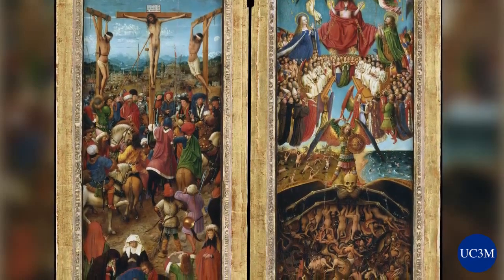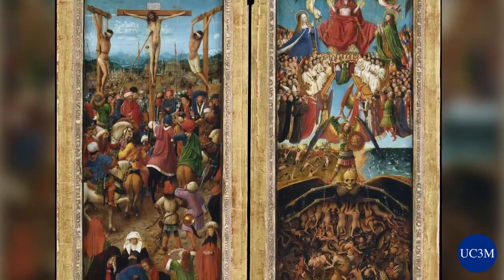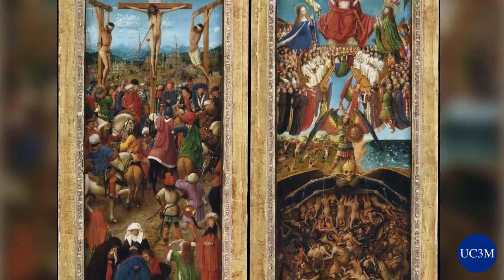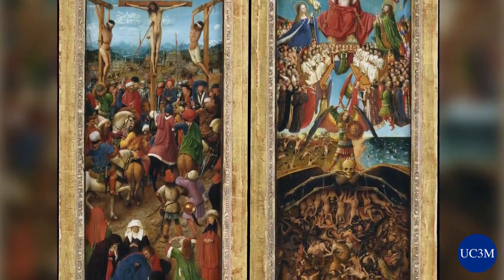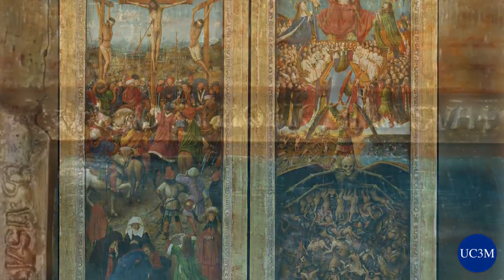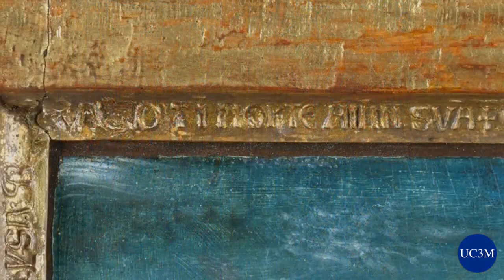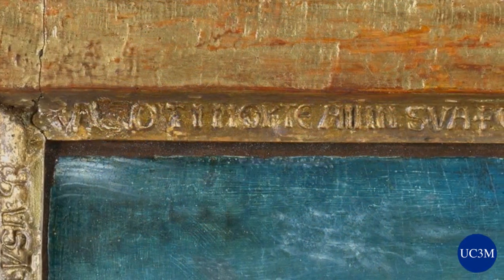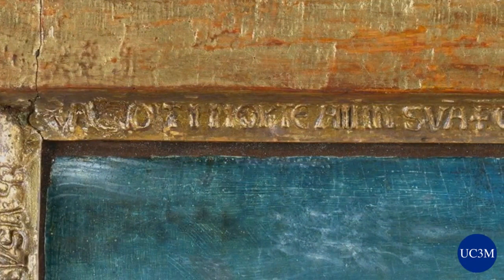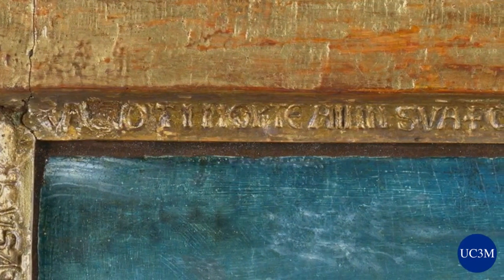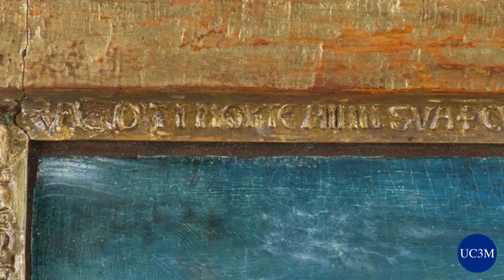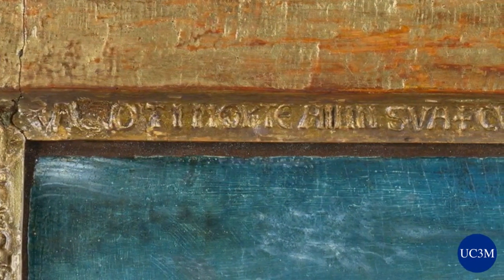The luster of the paint surface is characteristic of oil paint as used in Netherlandish painting. The frames are original — this is unusual. They are inscribed with text in Latin from the Bible and the Gospels that relate to the scenes painted inside.